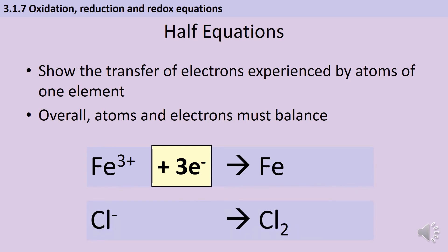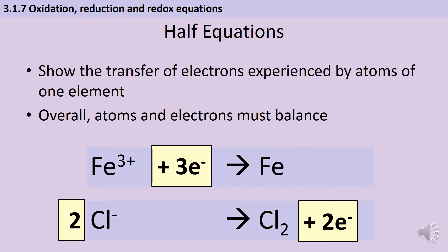To take something slightly more complicated, we could have chloride ions turning into chlorine molecules. We can't have one chloride ion making one diatomic chlorine molecule, so we need two chloride ions. On the left hand side we currently have two negative charges but on the right hand side we're neutral, so in order to make these equivalent the right hand side needs more negative charge — we need to add two electrons on the right hand side.